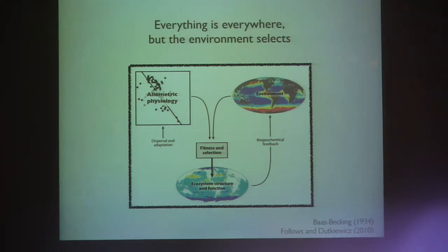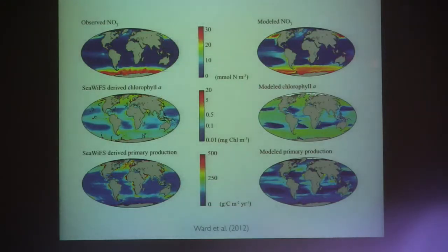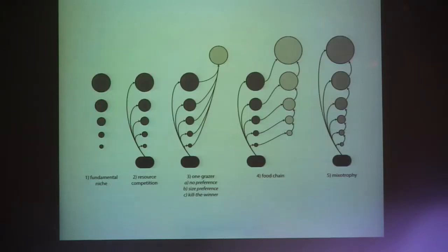Putting all this into the global ecosystem and circulation model — this is the Darwin model philosophy done with this size-structured model. You assume all size classes exist everywhere and the environment selects the winners. Running the model forward and comparing output to observations, you can convince yourself it's doing a reasonably good job, enough to have some confidence going forward — obviously not perfect, but hopefully good enough.